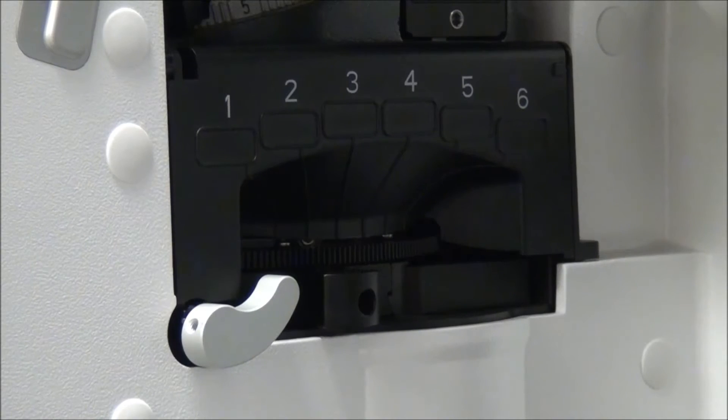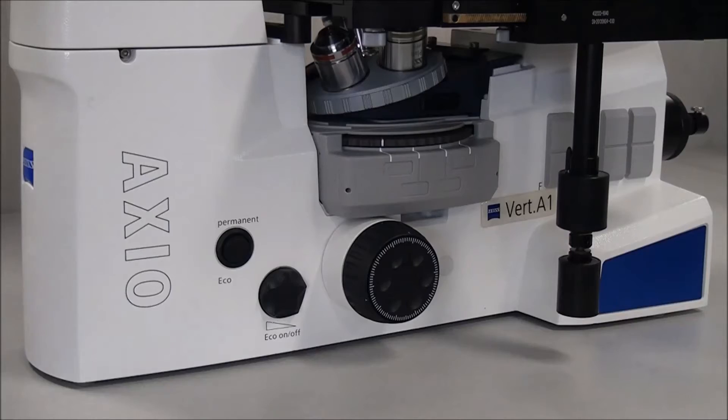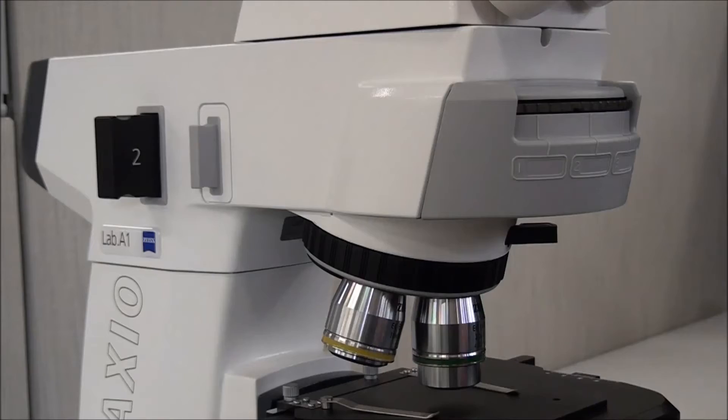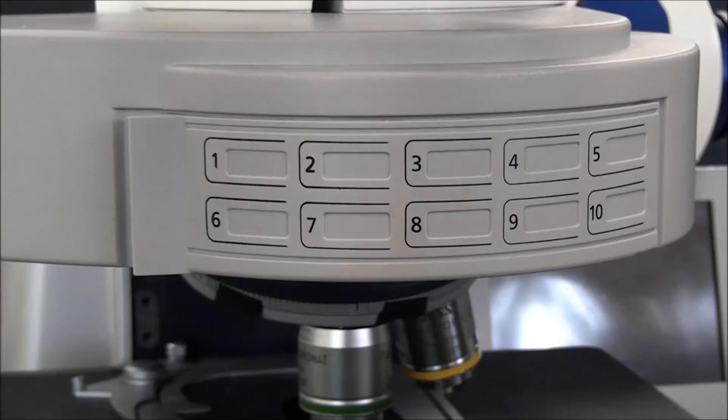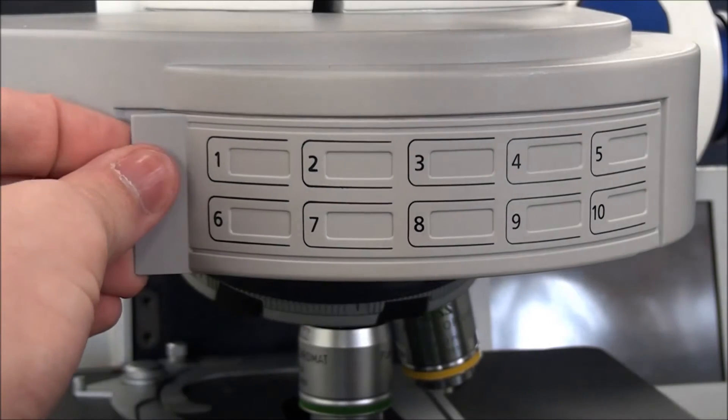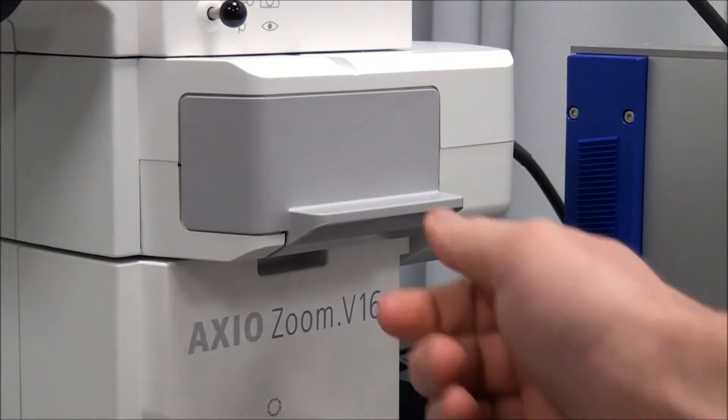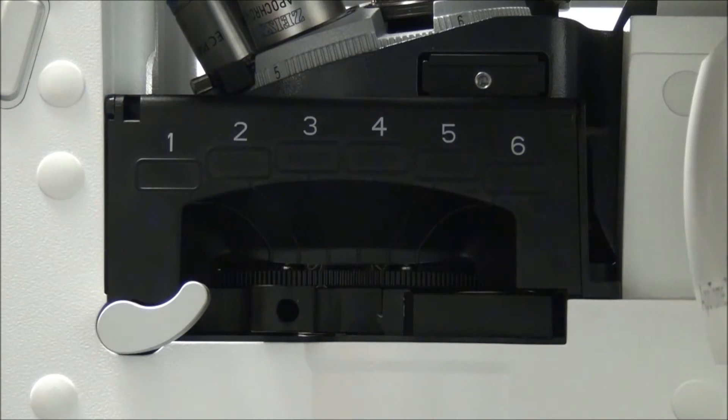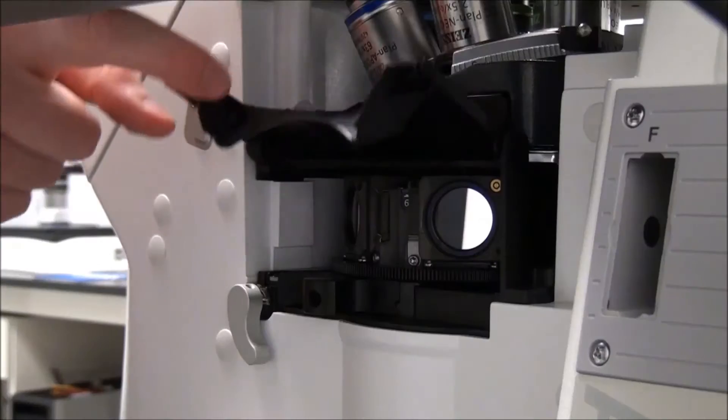Remove the cover or flip open the access panel. There are a few variations. On Axio Vert A1 and Axio Lab A1, pull the door straight off. On Axio Imager, gently pry open the access door. On Axio Zoom V16, pull the gray door straight out. On Axio Observer, first flip down the teardrop-shaped locking lever before opening the access panel.